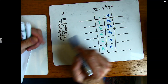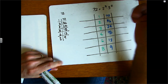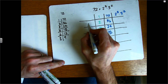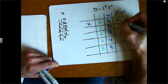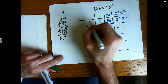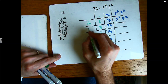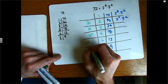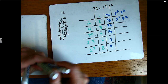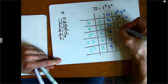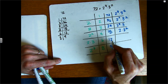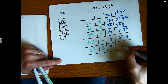1's prime factorization is undefined because it's neither prime nor composite, but 72's prime factorization is 2 to the third times 3 squared. 2's prime factorization is 2, and 36's is 2 squared times 3 squared. 3's prime factorization is just 3. 4's is 2 squared. 6's is 2 times 3, and 8's is 2 to the third. 24's is 2 to the third times 3. 18's is 2 times 3 squared. 12's is 2 squared times 3, and 9's is 3 squared.